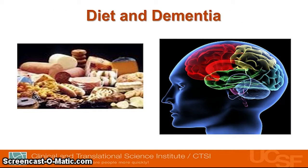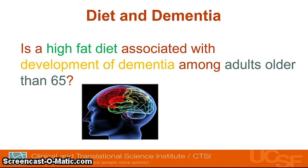Here's another example: a student interested in how diet is associated with the development of dementia. This was a prospective cohort study of older adults looking for associations between diet and dementia development. The research question presented was: 'Is a high-fat diet associated with development of dementia among adults older than 65?' This was a really well-crafted research question on the first try — with the predictor, outcome, and study population all clearly identified.